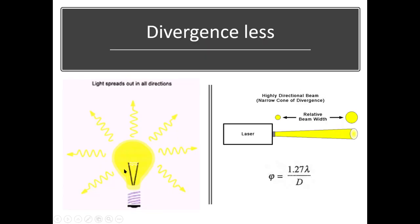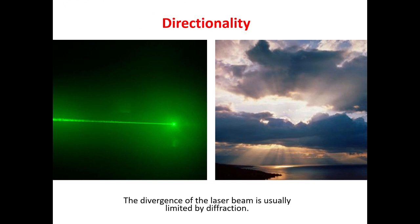Unlike ordinary light from an ordinary bulb, which diverges in all directions, laser diverges very little. The spot size of a laser beam increases very little even over a very large distance in the direction of the laser. This small divergence angle is due to diffraction, because the laser has to pass through a small aperture of the source. The divergence angle depends on the diameter of this aperture and the wavelength of the laser, given by: divergence angle = 1.27λ / D. Due to this low divergence, a laser is highly directional, which enables its use in distance measurement of distant objects.